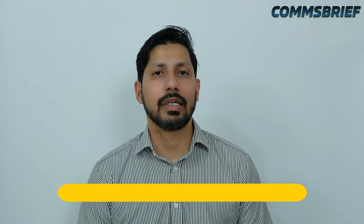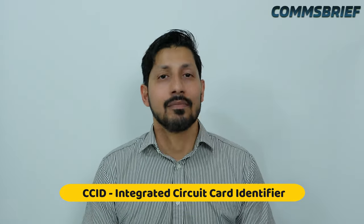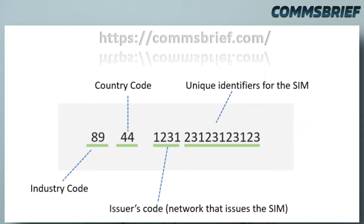The third identifier is the ICCID number, which stands for Integrated Circuit Card Identifier. As you may know, your SIM card is a combination of hardware and software, and the ICCID number is assigned to the SIM hardware, which is the golden shiny part of your SIM card. The ICCID number is a 19 to 20 digit number, which is broken down into four parts. As you can see in the screenshot, the first part is the industry code, the next part is the country code, followed by the network issuer's code, and finally the last digits are unique identifiers for individual SIM cards.